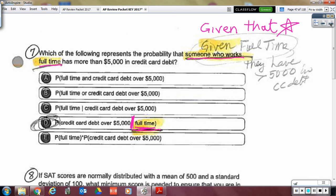All right, moving on. So number seven said, which of the following represents the probability that someone who works full-time. So that's the given that. That means given that someone works full-time, then what's the probability that he or she has more than 5,000 in credit card debt. So the only one that has that given that condition is D.